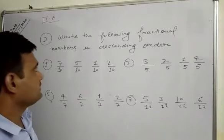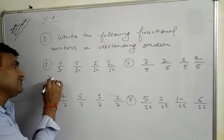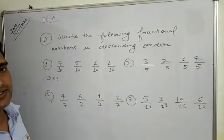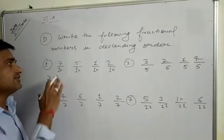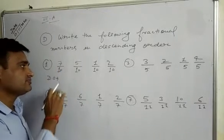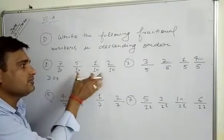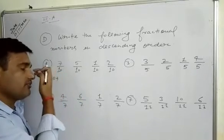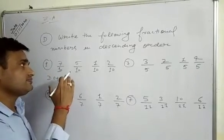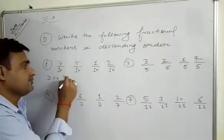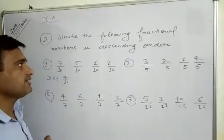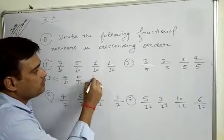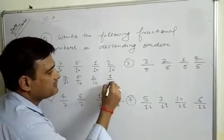Now, write the following fractional numbers in descending order. In descending order, we write the greatest number first and the lowest number last. Here, all the denominators are 10. So the greatest number has numerator 7. In descending order, we first write 7 by 10, then 5 by 10, then 2 by 10, then 1 by 10.